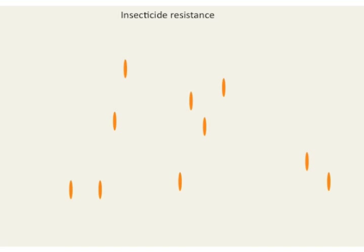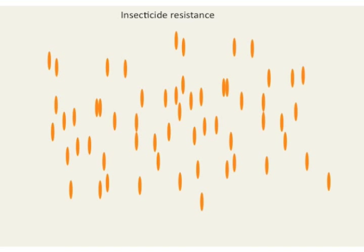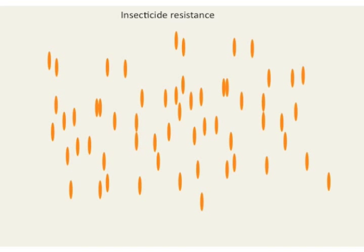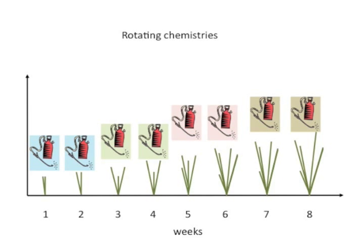Insecticides are lethal to most, but not all thrips, and those that survive are able to pass on the genes that confer resistance to their offspring. If a lot of insecticide resistant thrips are left in the field, the insecticide they become resistant to won't kill the thrips. This is why rotating between different classes of insecticides during a growing season is important.